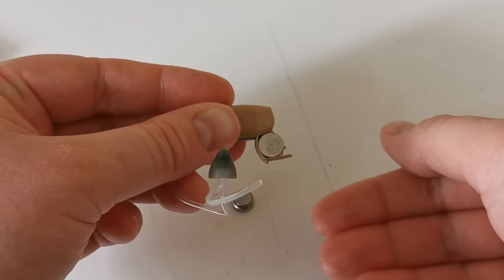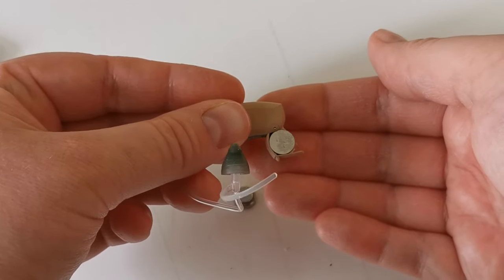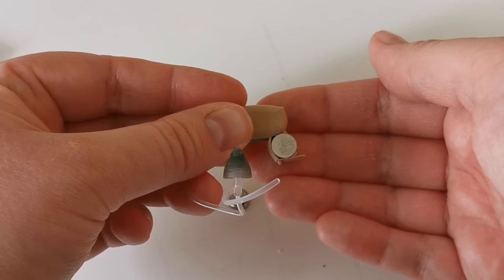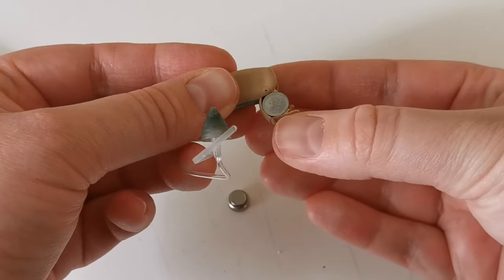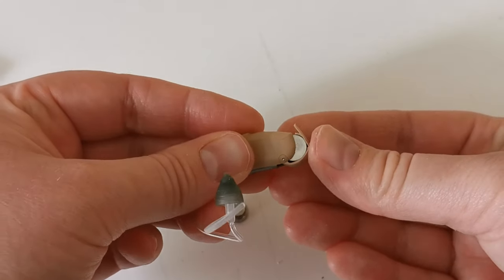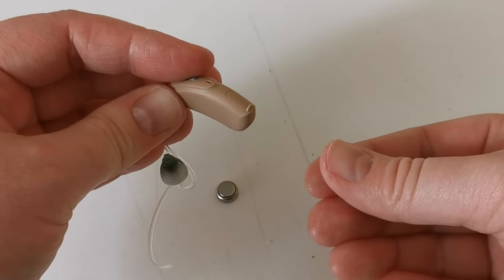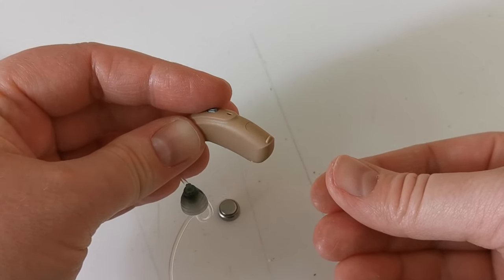Allow the battery to sit in the battery drawer for a minute before you close the door. Close the battery drawer to turn the hearing aid on, and that's how you change your battery.